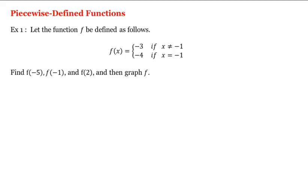So for example, this would be considered a piecewise defined function. It means that f is defined by different rules according to what x is. That is, if x does not equal negative 1, then f is equal to negative 3. Otherwise, if x does equal negative 1, then f is equal to negative 4. So there are different rules that define f depending upon the input x.